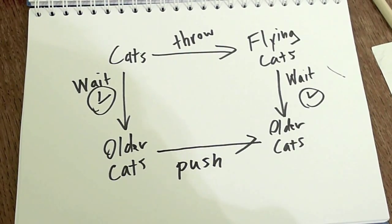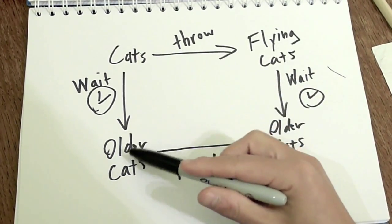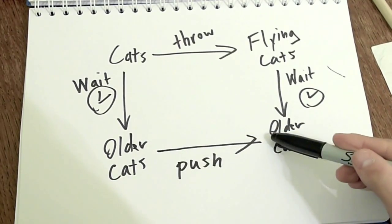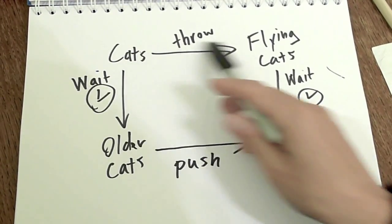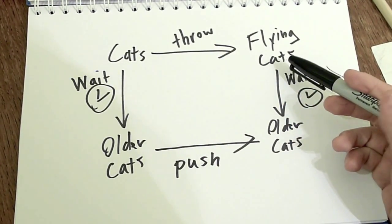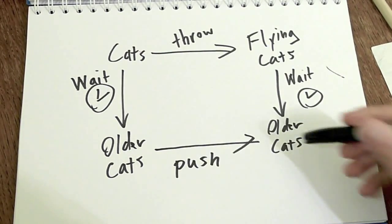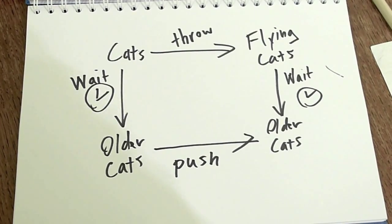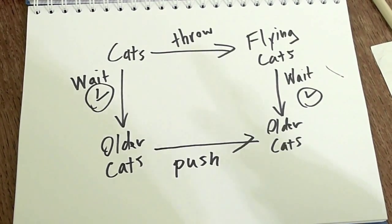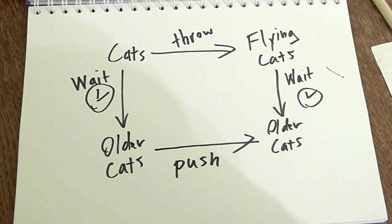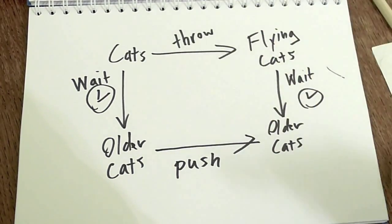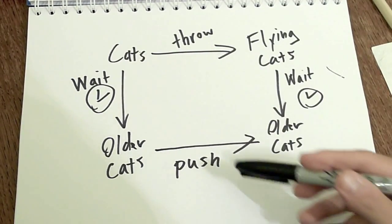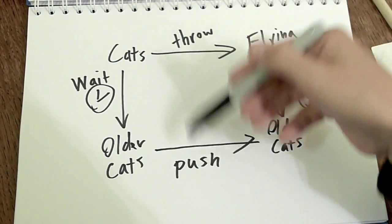To say this diagram commutes is to say that if you waited, you know, wait a minute, and then push him one meter, that's the same thing as throwing the cat one meter, and then waiting one minute. You get the same object. You get an older cat who's one meter away from you. That's my stupid example. And what it means is that there's something very similar about pushing and throwing. What's similar? I would call it movement. There's motion involved.